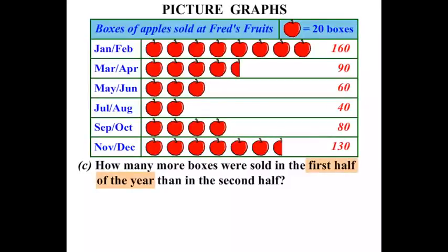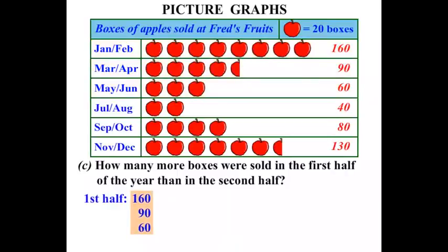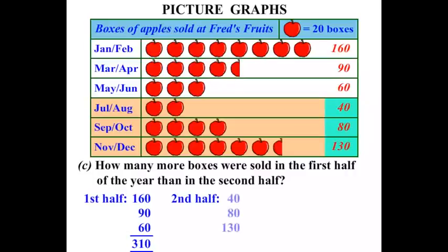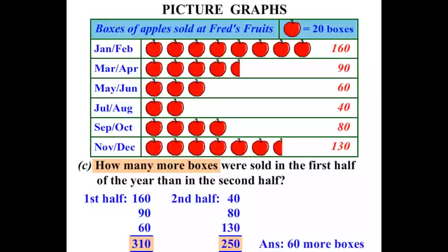Going back to the question, we're comparing the first half of the year with the second half. The first half, as shown on the diagram, gives us 160, 90, and 60. Adding them up, we get 310 boxes altogether. Now for the second half: 40, 80, and 130 — adding those up gives us 250. So how many more boxes? Comparing 310 with 250, we subtract to find the difference: 60 more boxes were sold in the first half of the year. Excellent.